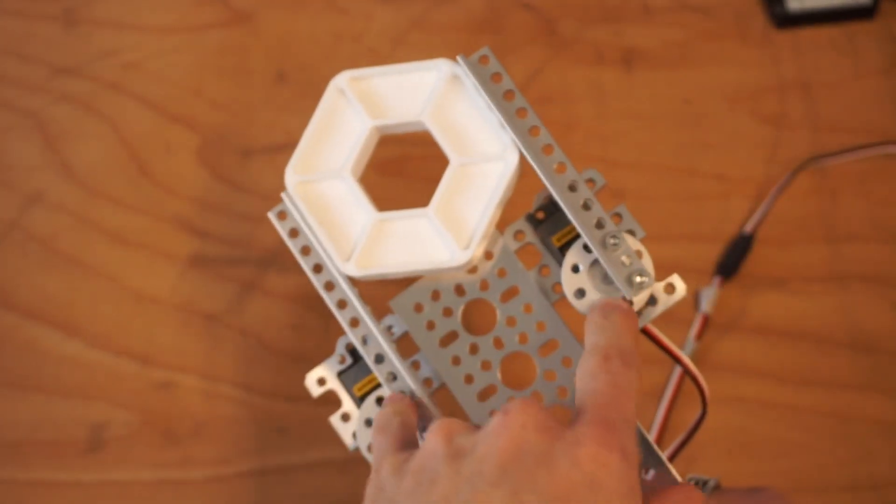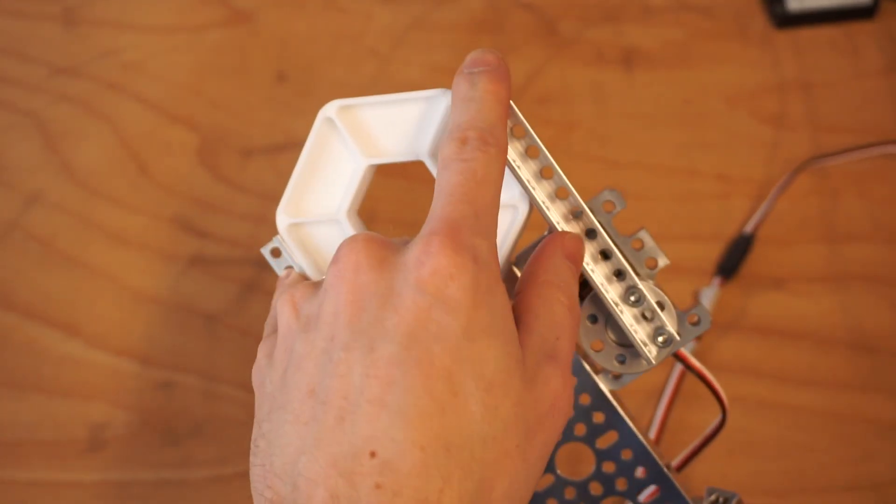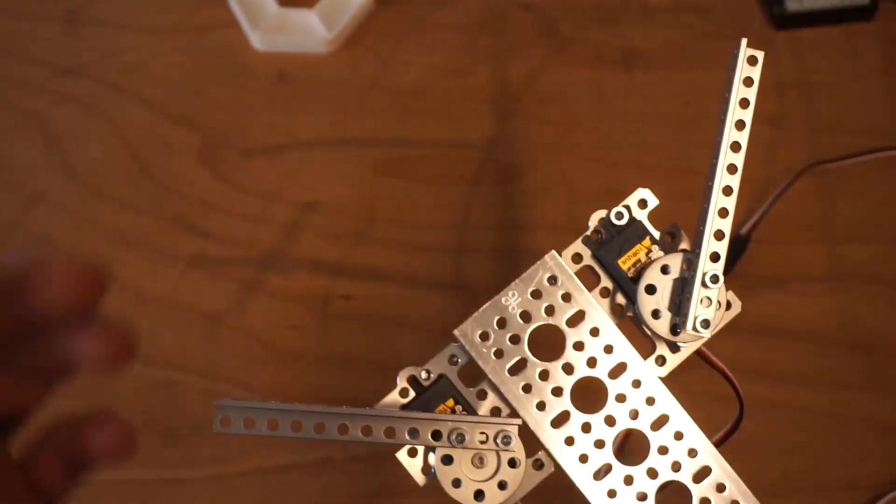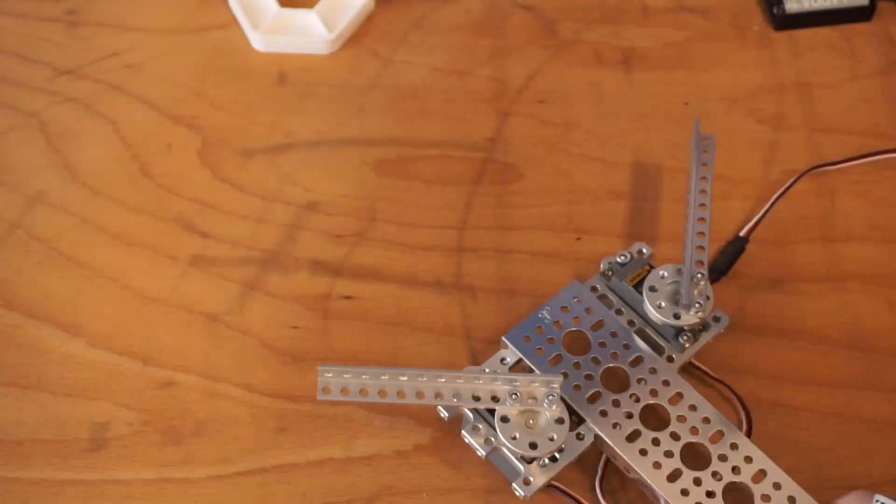So one drawback of using a two-servo design is you're going to have to make sure that you design these to be able to be perfectly in line. One way you can get around that is by using some elastic or rubber bands.